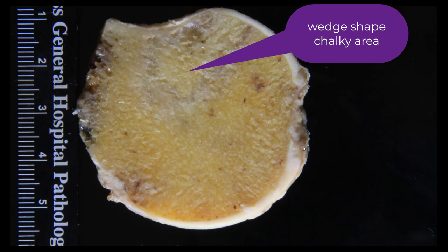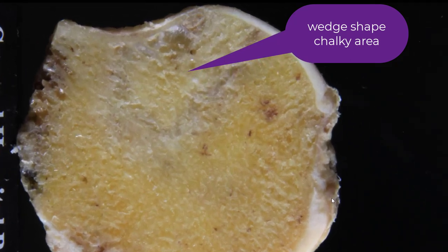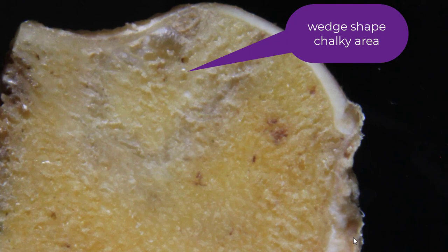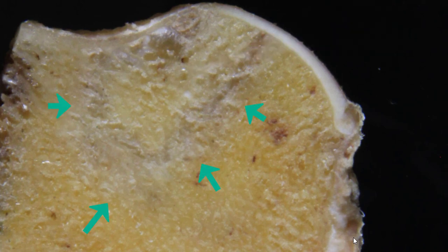Avascular necrosis is typically subchondral — right under the articular cartilage. It's typically wedge-shaped. What is lacking in this picture — and don't get me wrong, this is avascular necrosis — but what is lacking is that lifting off or detachment of the cartilage that you typically see with avascular necrosis.